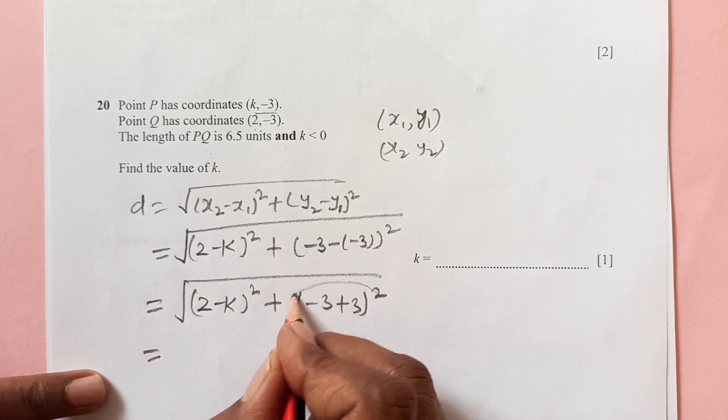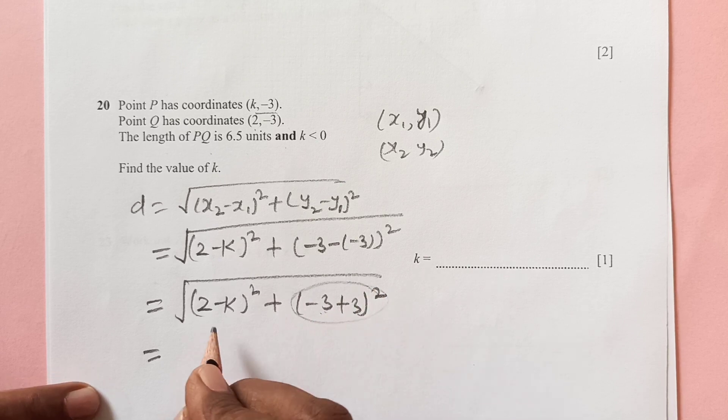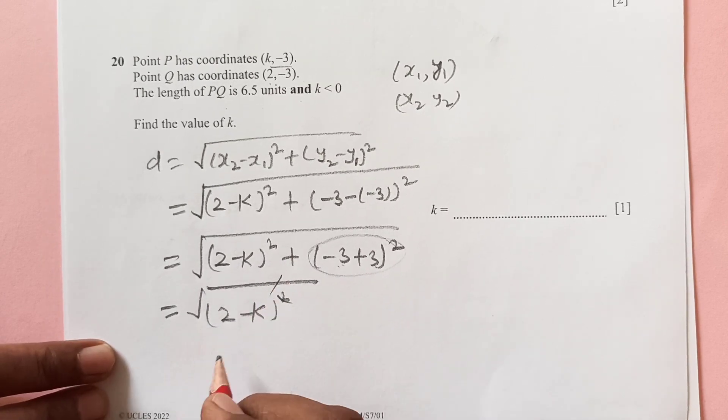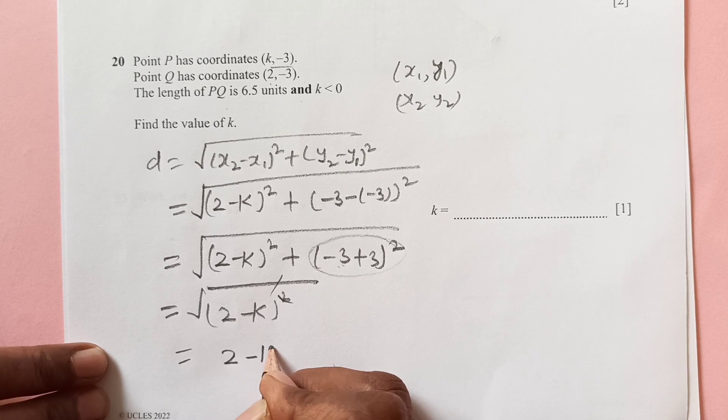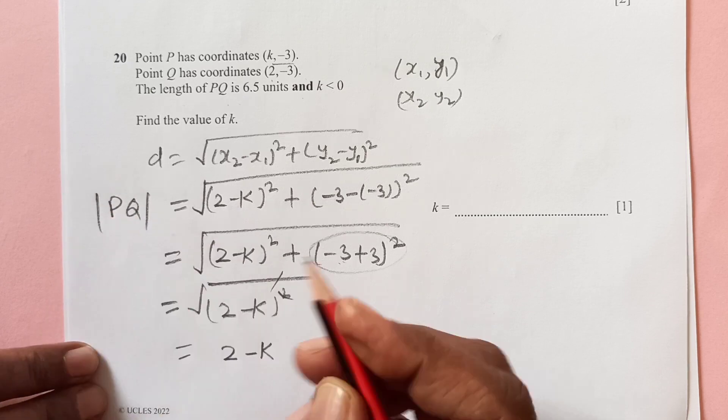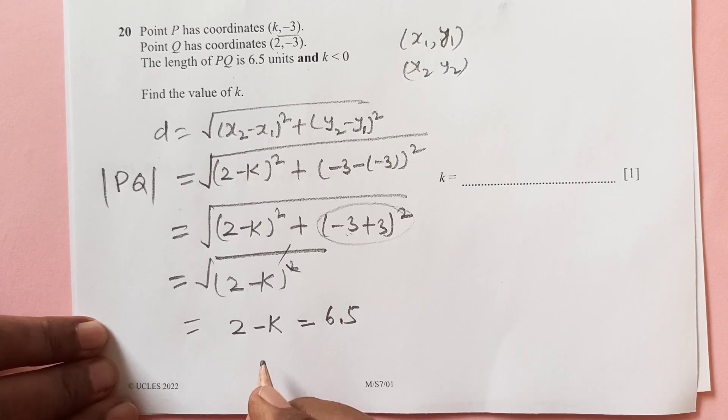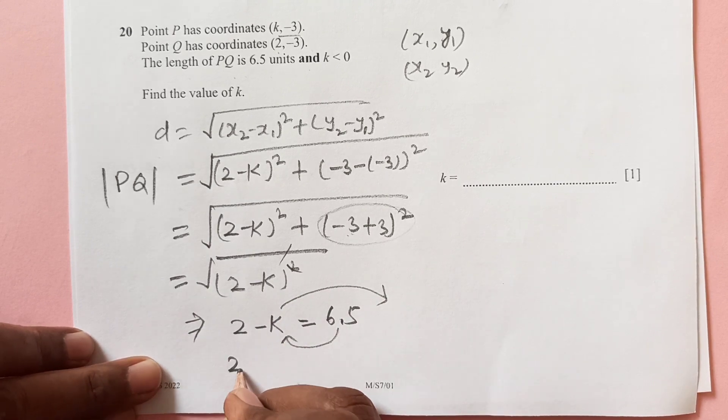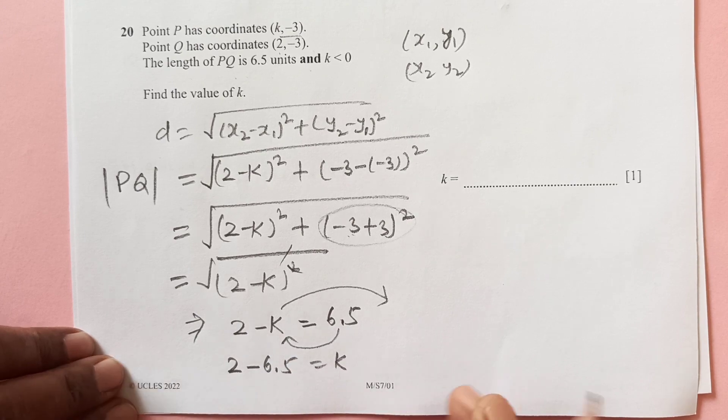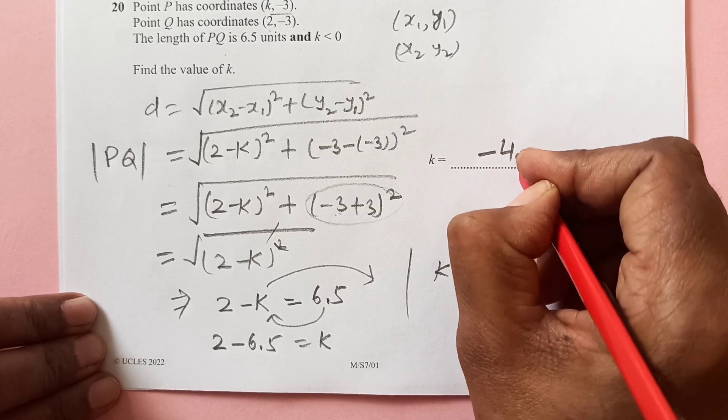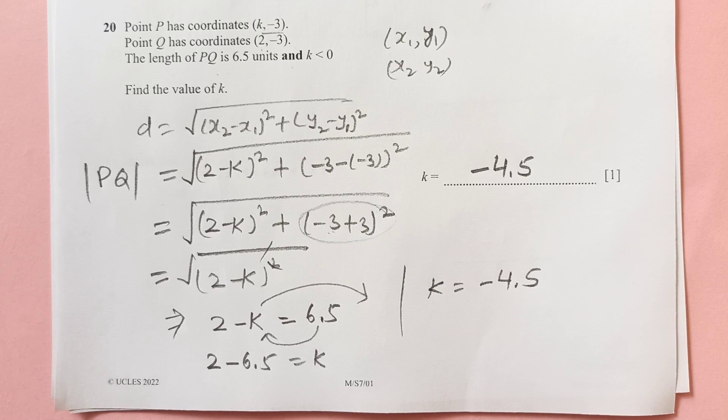So 2 minus k squared plus this is negative 3, then this is plus 3, zero. So now you see this all thing is 0. This becomes 0. So we are left with only this square root and square, so they cancel. We have 2 minus k. Now this distance PQ is equal to 6.5. From here we can calculate the value of k. Move k to other side, bring 6.5 here. 2 minus 6.5 equals k. So from here k is equal to negative 4.5. So that will be the final answer.